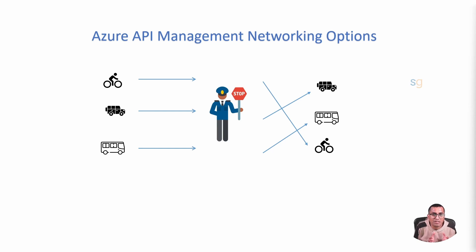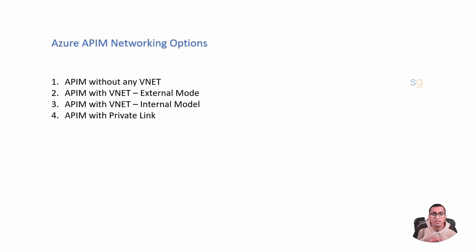This digital intersection has multiple paths — think of it as a complex crossroad. Some roads lead to public spots like popular websites, while others lead to private secure places like a company's confidential data. Azure API Management acts like a gatekeeper, ensuring that only the right data requests get to enter the private lanes while helping other data find the best route to public areas. The available networking options are: no virtual network, external mode VNet, internal mode VNet, and private link.